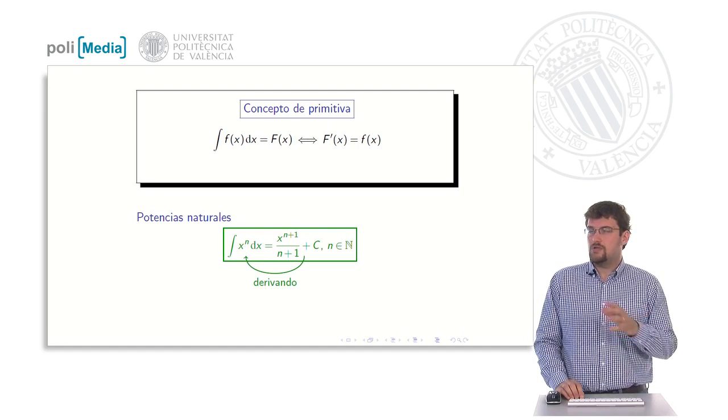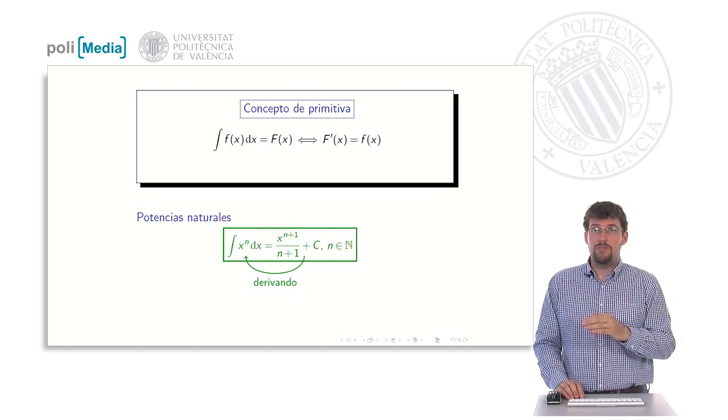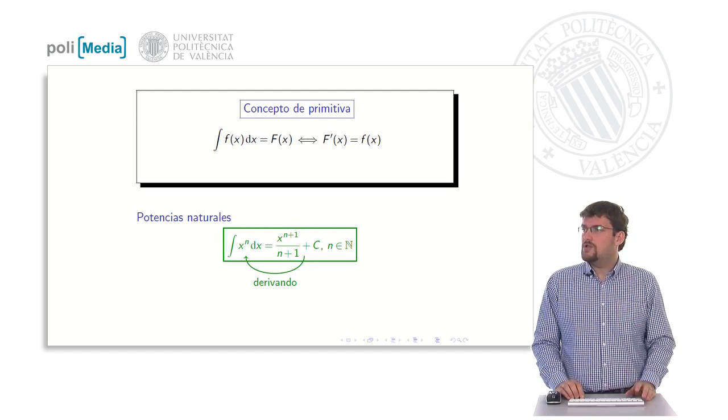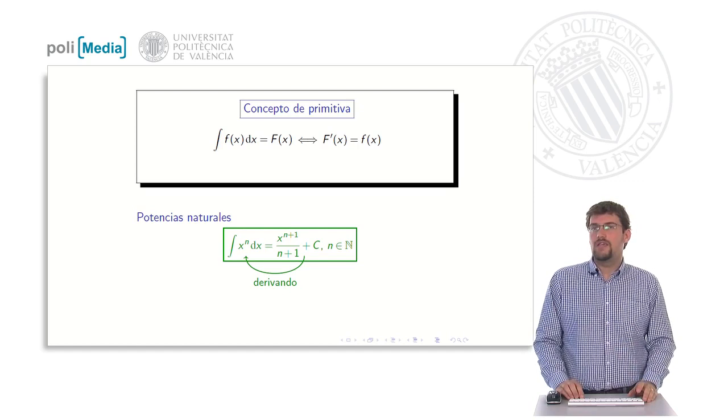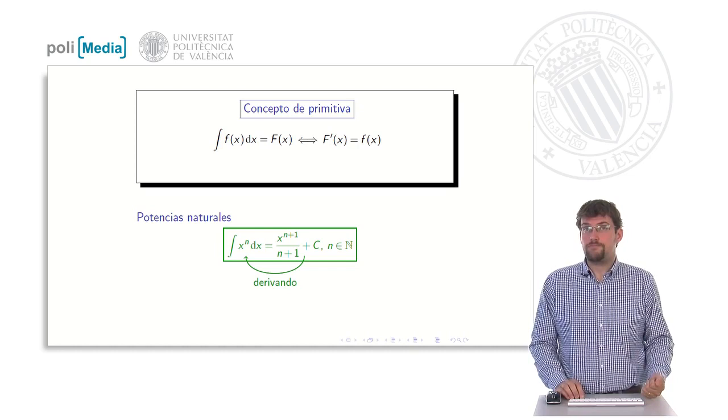How do we check if this expression is indeed correct? Well, as we said before, we would take the formula and we would derive it. If we derive x power to n plus 1 divided by n plus 1, the exponent would go down, the n plus 1 would get cancelled, and we would end up having x power to a lesser exponent, which in this case would be n. Then, indeed, the derivative of that expression happens to be x power to n. Let's not forget that c does not bother us because its derivative is 0 anyway.